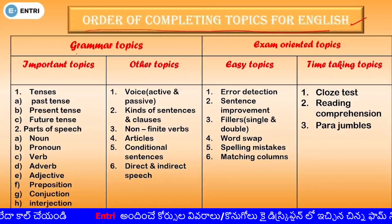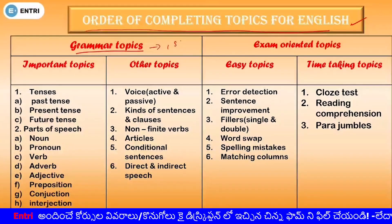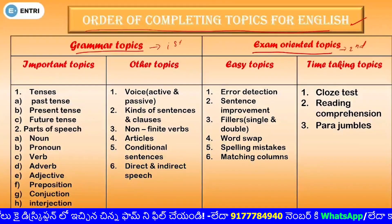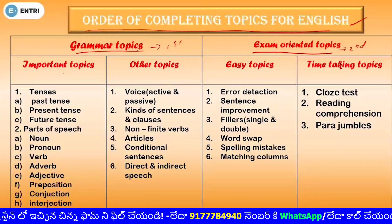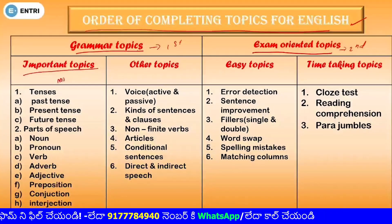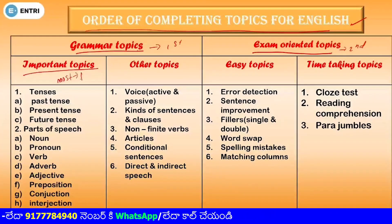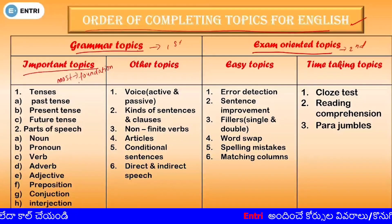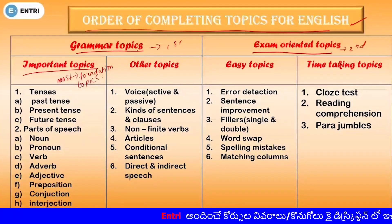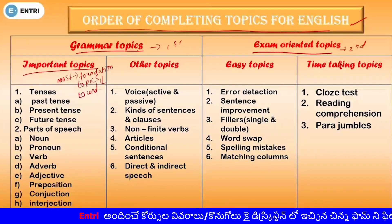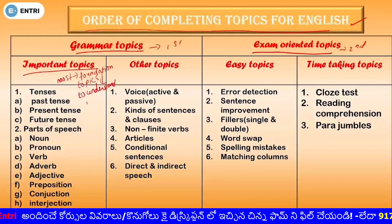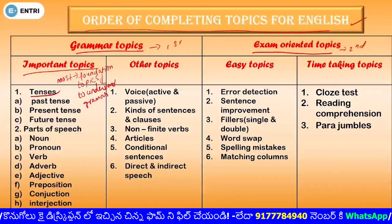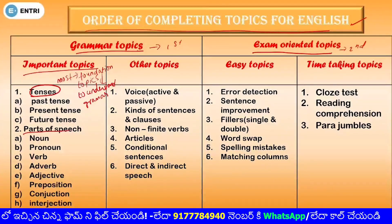In English, we will complete the first two grammar topics. Next, we will complete the exam-oriented topics. Under grammar topics, we use two categories — first one is important and next one is other. Under important topics, we have English grammar. The main two topics are tenses and parts of speech. If you cover these two topics, you can easily use the next other grammar concepts.